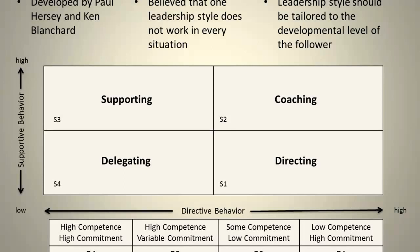On the vertical axis you'll see supportive behavior. Supportive behavior is the extent to which a leader engages in two-way communication — there is a dialogue, there is listening, they provide support and encouragement, they facilitate interaction and involve followers in decision-making. One thing to add: when anyone hears the word "directive," they automatically associate that with being mean — that's not what this is. It has nothing to do with how you treat somebody, but more to do with how you convey information.